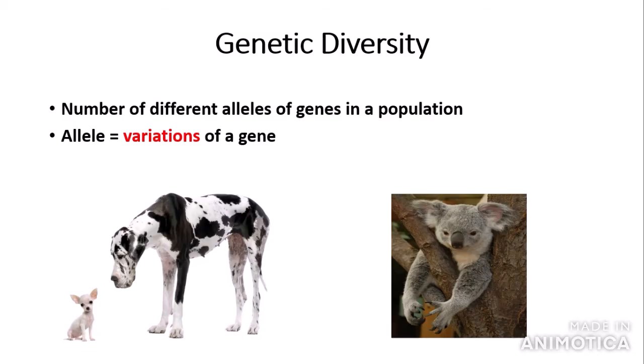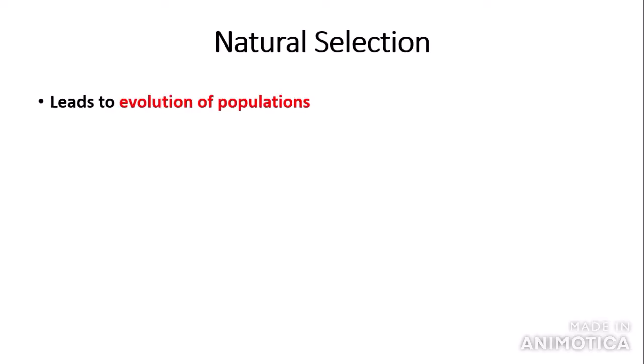Genetic diversity can be advantageous in natural selection. If a species or a population has high genetic diversity, it's more likely that there will be individuals able to survive extreme environmental conditions, enabling natural selection to occur. Natural selection is a theory deduced by the scientist Charles Darwin, and it leads to the evolution of populations.